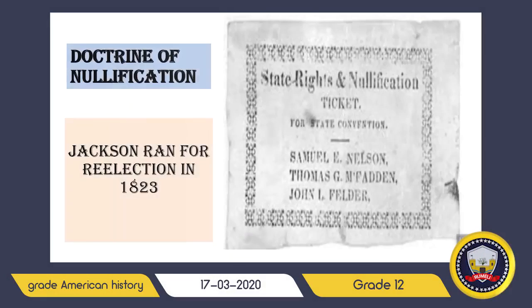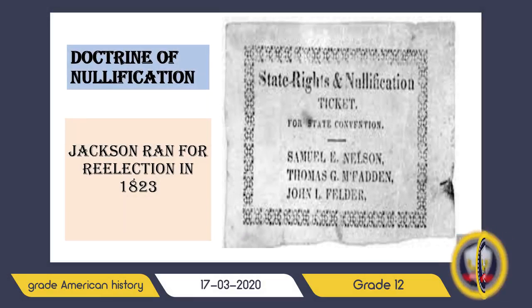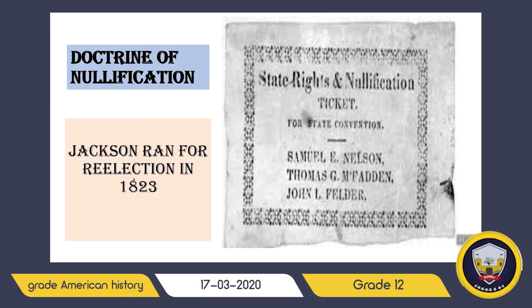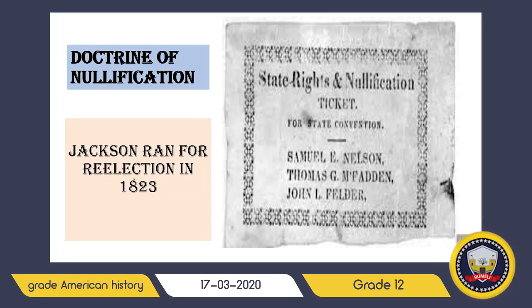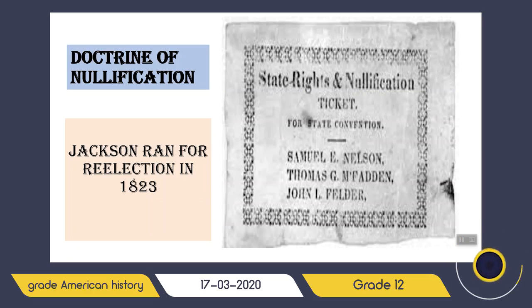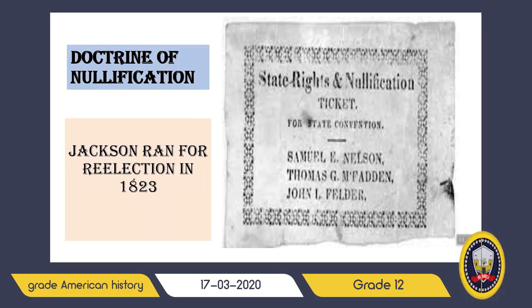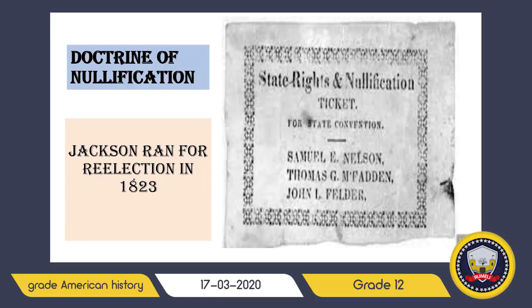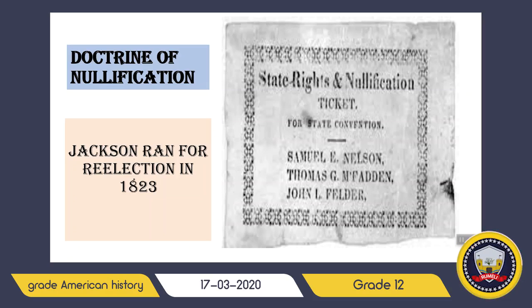Next we will talk about the doctrine of nullification. The tariff of abominations hit South Carolina hard because the state economy was in a slump. John C. Calhoun, who was Jackson's vice president, sympathized with the Southern people because he was one himself. He wanted to find a way to keep Southern states from leaving the Union, so he proposed a solution known as the doctrine of nullification. He said that a state had the right to nullify or reject a federal law that it considered unconstitutional.